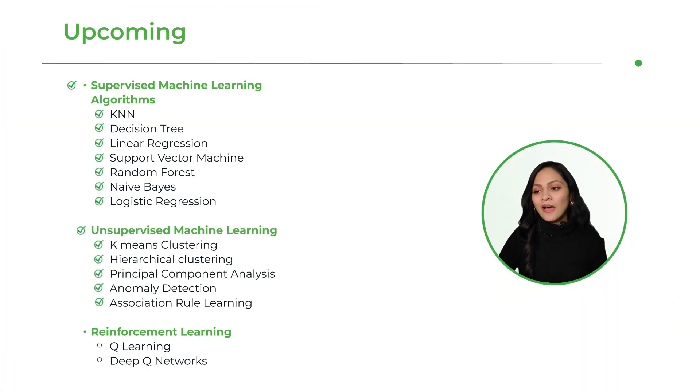So that was it for this video. We have already covered the supervised machine learning part in which we discussed K-NN algorithm, decision tree, linear regression, support vector machine, random forest, naive Bayes, and logistic regression. And with this video, we have also completed unsupervised machine learning part in which we have covered K-means clustering, hierarchical clustering, principal component analysis, anomaly detection, and association rule learning in this video. And from the next video, we are going to start reinforcement learning part. So stay tuned with Tutorials Point. Thanks for watching and have a nice day.